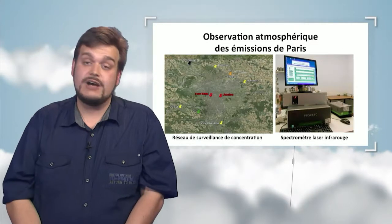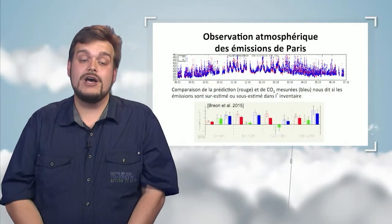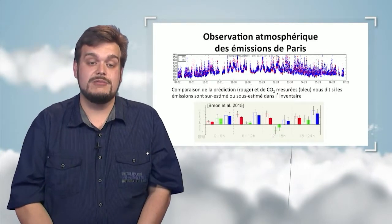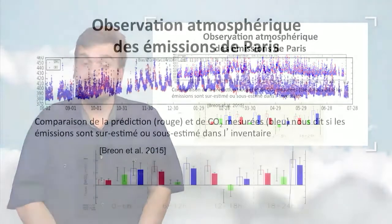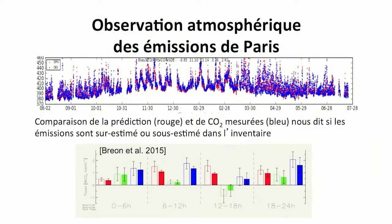We then perform modeling in order to combine measurements with simulations. For instance, we can compare predictions and measurements for a station very close to Paris. In red, we have results from concentration simulations, and in blue, we have concentrations actually observed by the network. There is a good correlation during some periods, but there are times when there is an offset. When predictions are higher than observations, it means that emissions have been overestimated in the model.